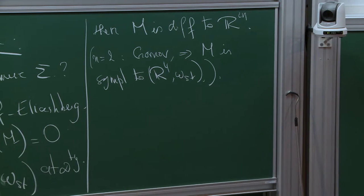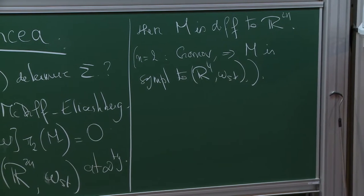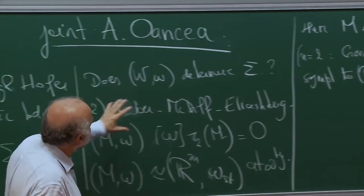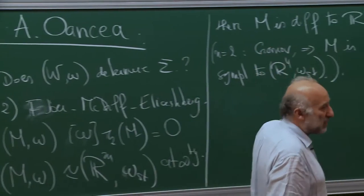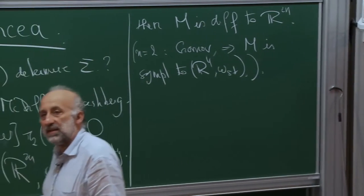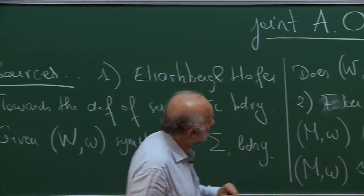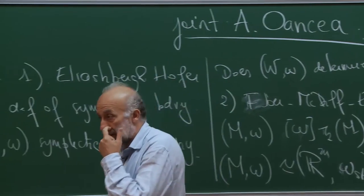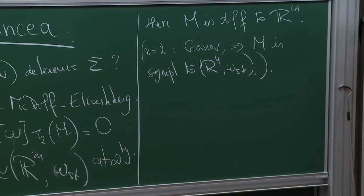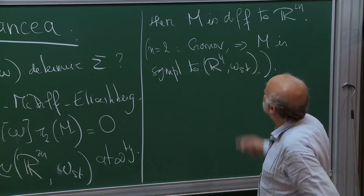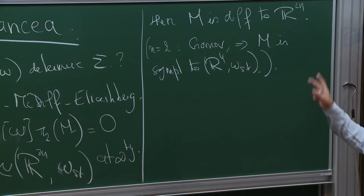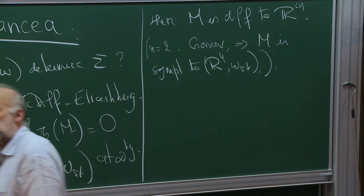The proof is actually in two parts. First you prove that the homology of M is zero except in dimension zero, and then you prove that pi_1 is actually zero — which is what Yasha proved. What you should remember about this theorem is that if M omega is like R^{2N} with the standard structure at infinity, then the homology of M is like the homology of R^{2N}.